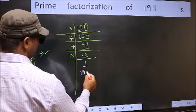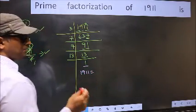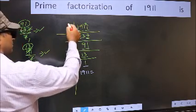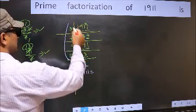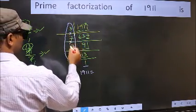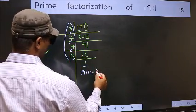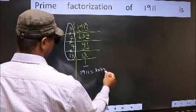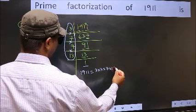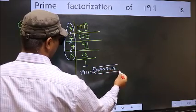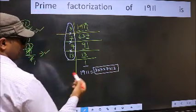So the prime factorization of 1911 is the product of these numbers: 3 times 7 times 7 times 7 times 13. This is the prime factorization of 1911.